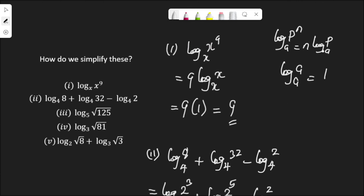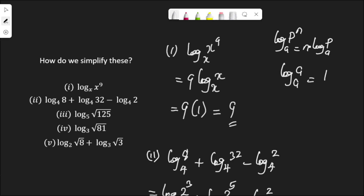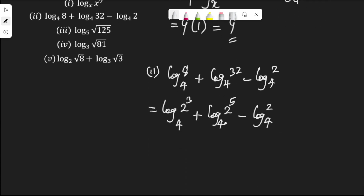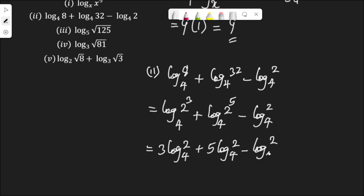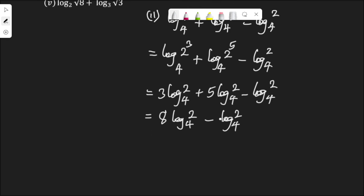If I apply the power rule — log p to the power of n to base a equals n log p to base a — I have 3 log 2 to base 4, plus 5 log 2 to base 4, minus log 2 to base 4. Since everything is log 2 to base 4, we can perform the addition and subtraction. So 3 plus 5 is 8; I have 8 log 2 to base 4, minus 1 log 2 to base 4.